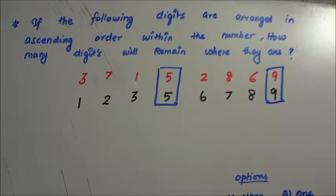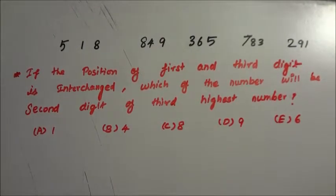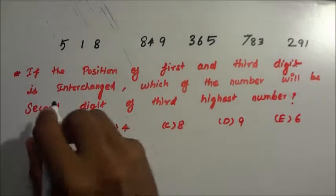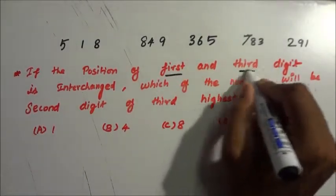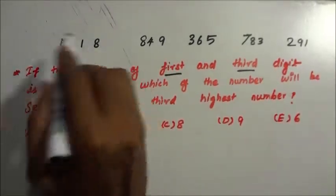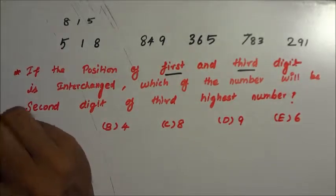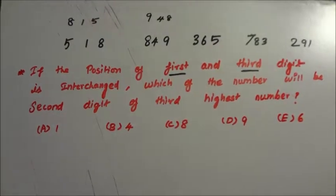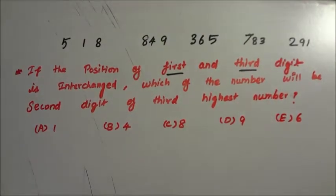Now we can move to the next problem. A series has been given — observe that series carefully and read the question very well. The position of the first and third digit are interchanged. This is the first digit and this is the third digit. So for example, 518 will become 815, and 849 will become 948. Likewise we have to change all numbers. But don't do the full rearrangement — just observe the key digit.